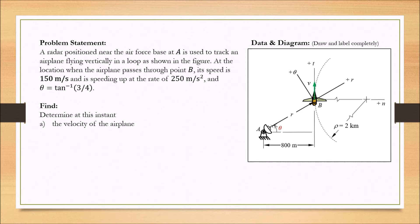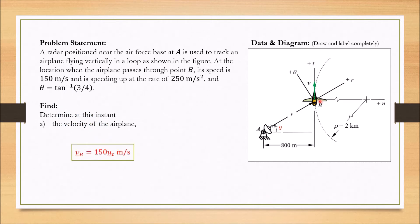The velocity of the airplane can be taken directly from the problem. It is stated that when the airplane passes through point B, its speed is 150 meters per second. From the diagram, we know that the direction of the airplane at B is in the tangential direction, U_T. So the velocity at B in vector form equals 150 U_T meters per second, where U_T is the unit vector in the tangential direction.